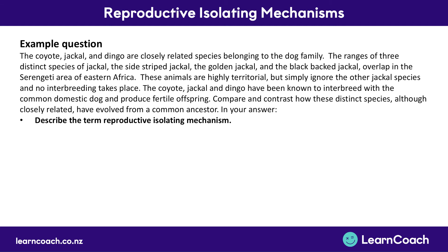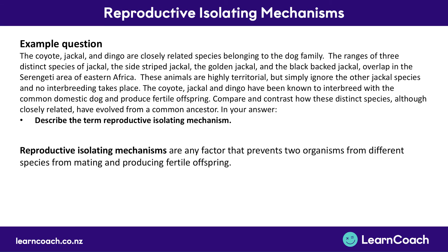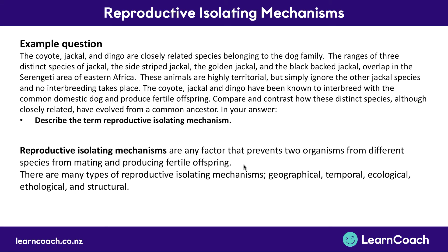For part one, we need to describe the term reproductive isolating mechanism. We can say that reproductive isolating mechanisms are any factor that prevents two organisms from different species from mating and producing fertile offspring. We can add that there are many different types, and listing all five shows depth of knowledge: geographical, temporal (timing), ecological (the niche occupied), ethological (behavioral), and structural (anatomical differences).